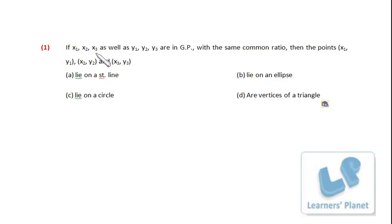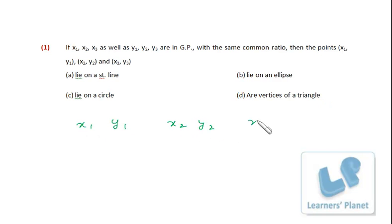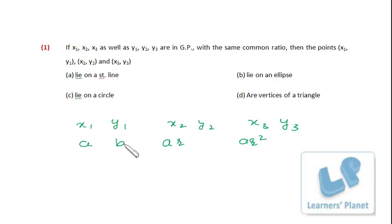Next problem: if x1, x2, x3 and y1, y2, y3 are in GP with the same common ratio, what can be said about the points (x1, y1), (x2, y2), (x3, y3)? Let x1 = a, y1 = b. Since they are in GP with common ratio r: x2 = ar, x3 = ar²; y2 = br, y3 = br².